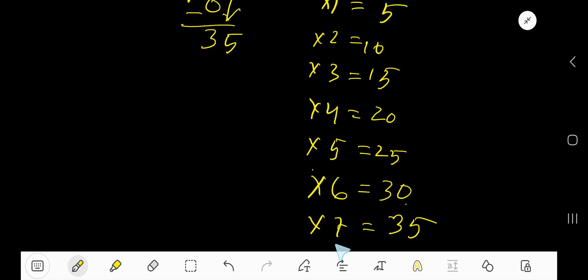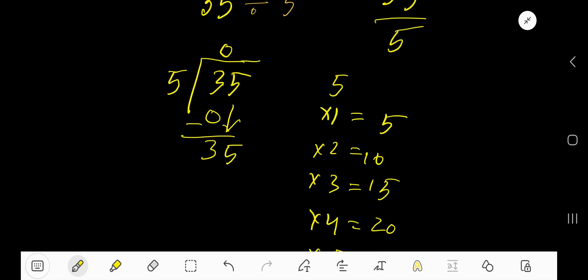That is, 5 times 7 equal to 35. 5 goes into 35, 7 times. 7 times 5, 35. You subtract 0.